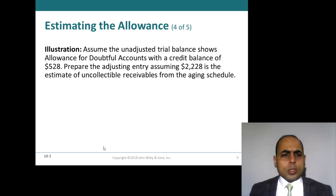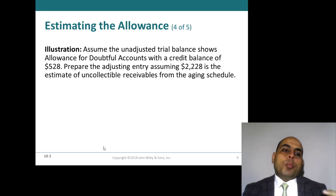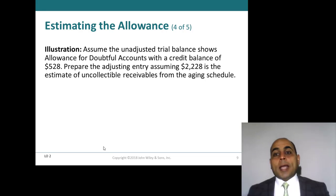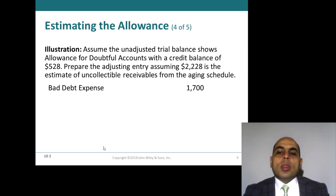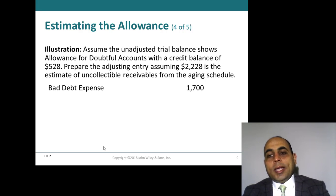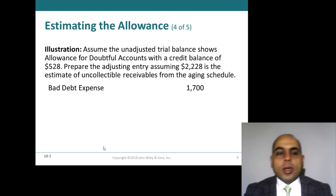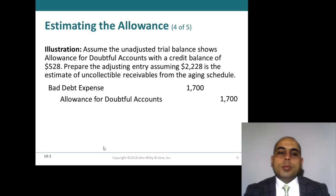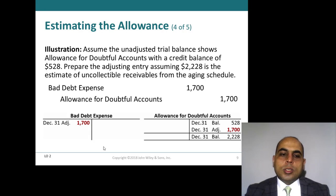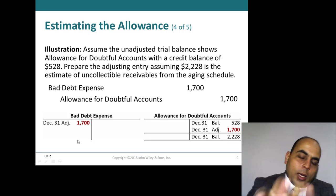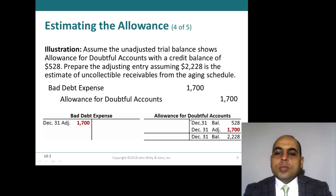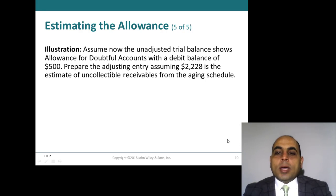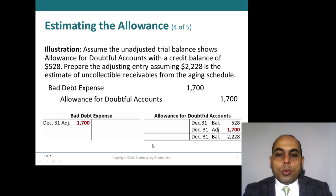We will record only the difference, which is $1,700 — the difference between the total estimate of $2,228 and the already-recorded $528. The entry is: debit bad debt expense $1,700 and credit allowance for doubtful accounts $1,700. The allowance account already had a credit balance of $528, and we add $1,700, bringing the total balance of allowance for doubtful accounts to $2,228.